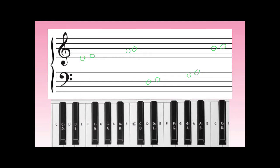Our first interval is from an E to an F. These are neighboring keys on our keyboard, so this is a minor second. The next interval is an A to a B — there are two half-steps between these two pitches, so this is a major second. The next two pitches in the bass clef are D to E: two half-steps, major second.